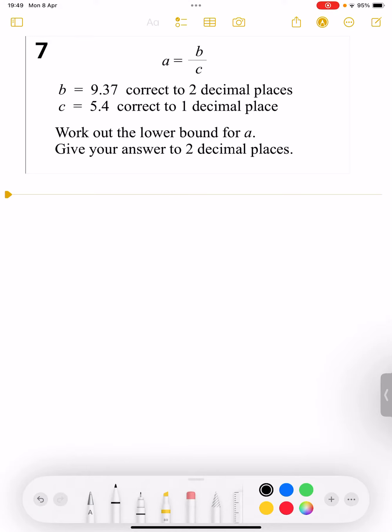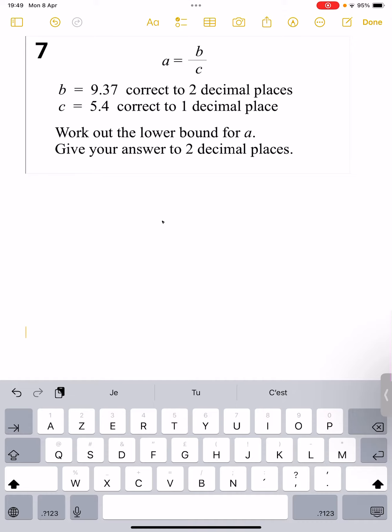Okay, here we've got a bounds question. First of all, anytime I see anything that's got the word bounding or whether it has been corrected to any decimal places or anything like that, I'm going to write down the error interval. So for b correct to two decimal places...